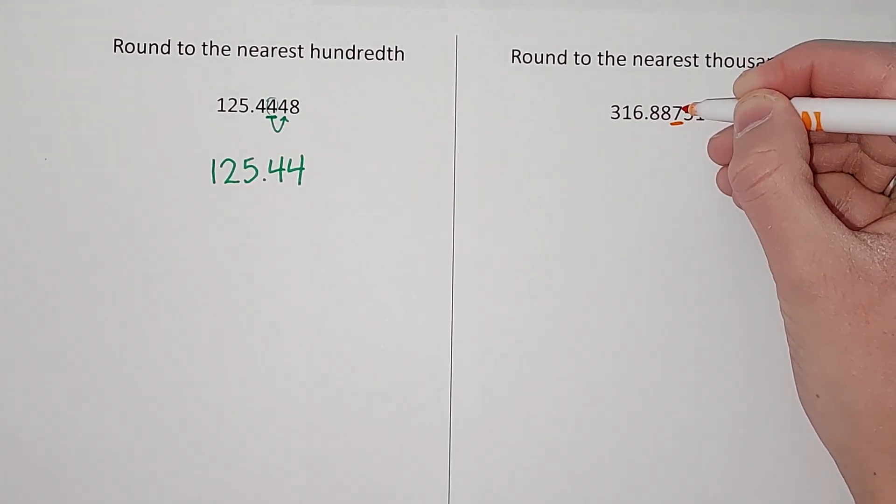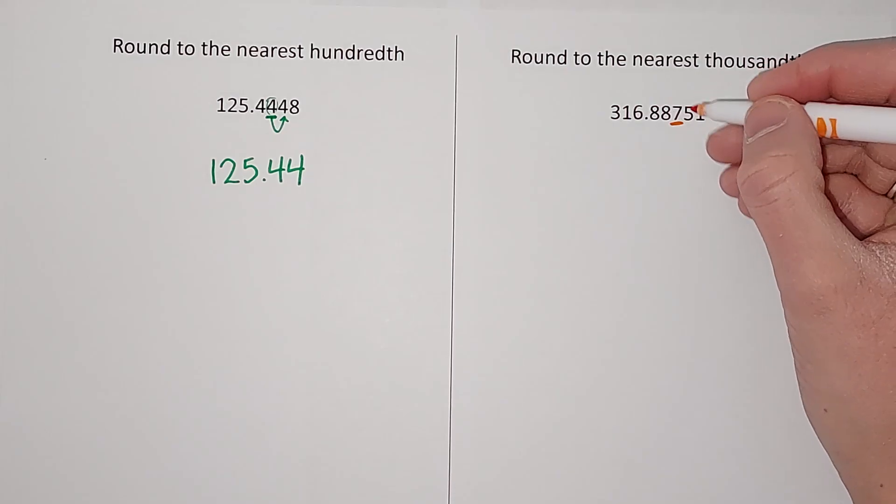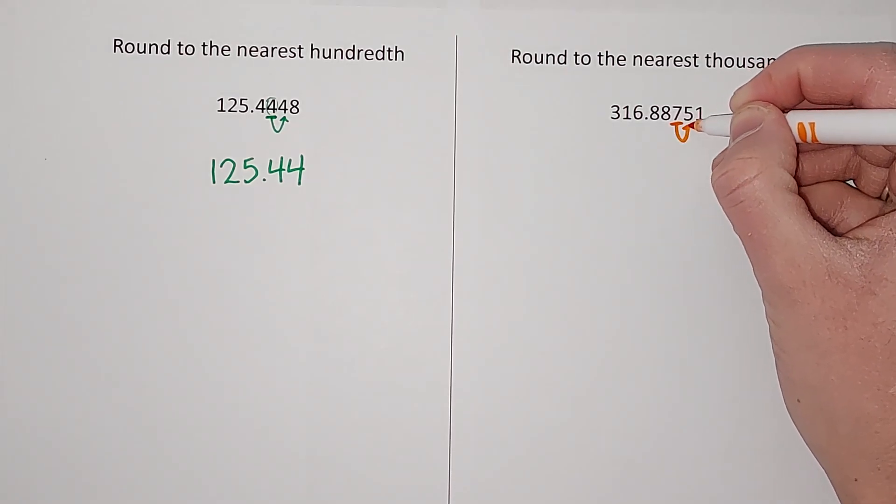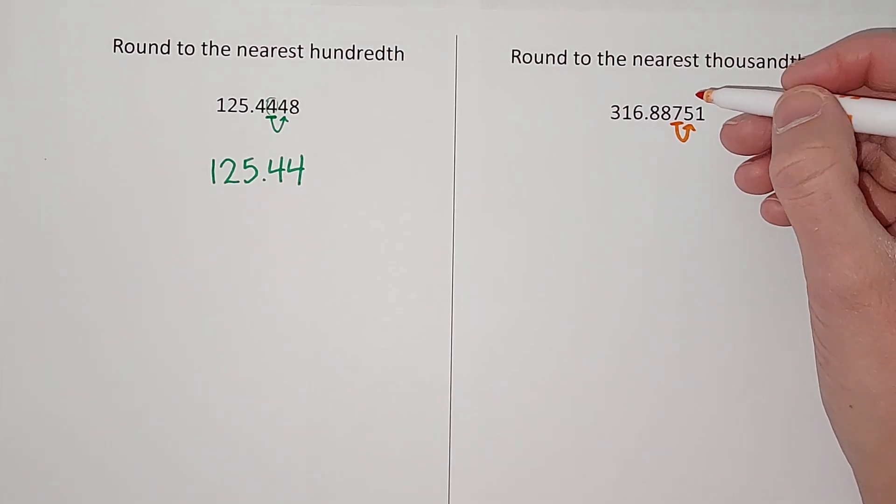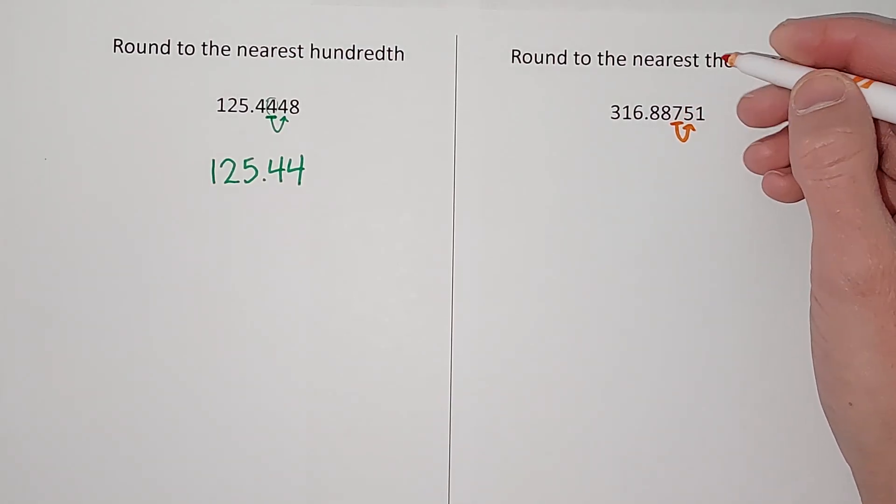It's a five. Anything five and above, we round this number up. So this seven is going to become an eight for our rounding purposes. So 316.888.